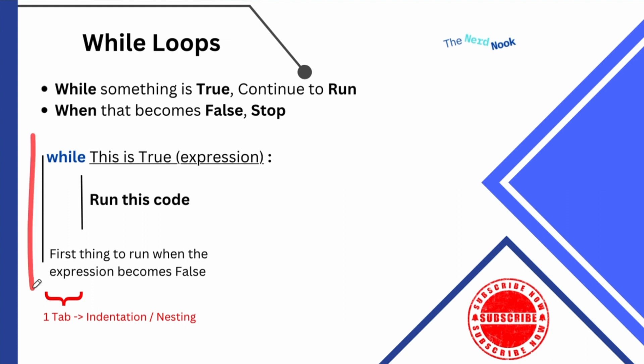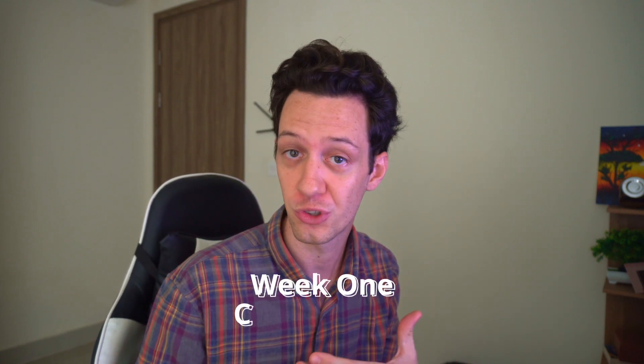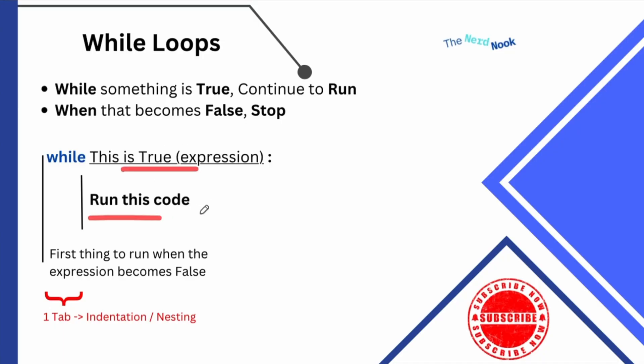Starting here with the while loop, I have the basic structure created for you. A while loop is going to run while something is true — it continues to run while this expression is true. You've seen expressions before: last week, when you were introduced to conditional statements, a condition takes an expression like 'if 10 greater than 5 do this.' Well, 'while 10 greater than 5, repeat.' Anything inside here is going to run every single time this loop runs, and the loop continues while our expression is true. When the expression becomes false, we stop or the loop breaks. And the first line of code outside the loop is what runs next.